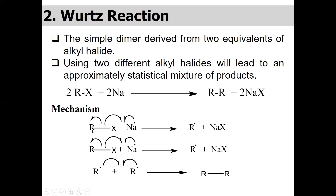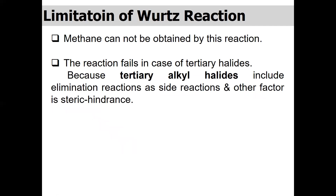The simplest alkyl halide is methyl chloride, so two methyl radicals will combine to give ethane. Methane cannot be synthesized by this reaction. One limitation is that if you have a tertiary halide, for example tertiary butyl chloride, this reaction also fails. The reason is that when you treat tertiary halide with sodium metal, instead of dimerization, elimination occurs. This is due to steric hindrance.